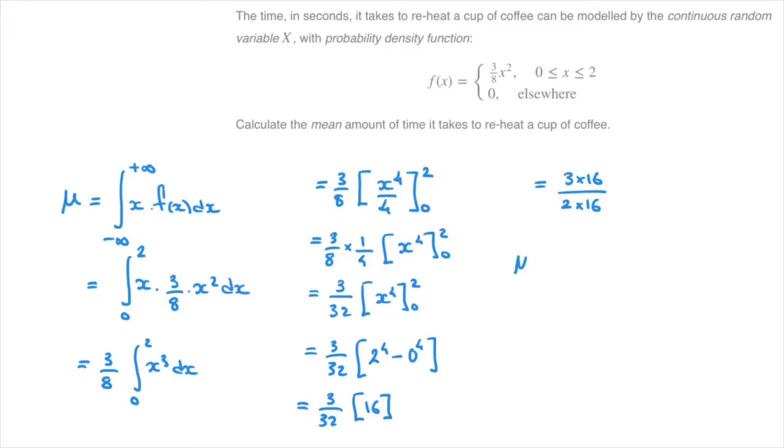Which equals to three times 16 over 32, which is two times 16. Finally, the mean mu is equal to three over two, which as a decimal is equal to 1.5.